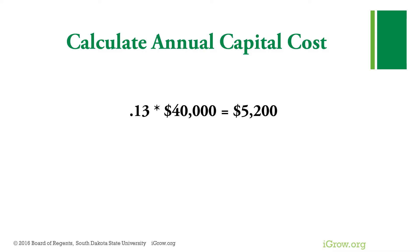A second method is to understand that capital consists of two components: interest plus depreciation. I use an interest rate of 5% per year and a depreciation rate of 8% per year. Interest plus depreciation — 8 plus 5 — is 13%, or 0.13. If we multiply 0.13 times $40,000 we find that the annual cost is $5,200. This is almost the same answer as we had before.